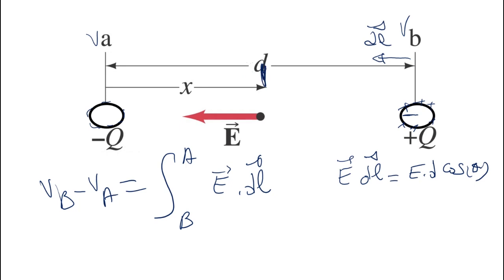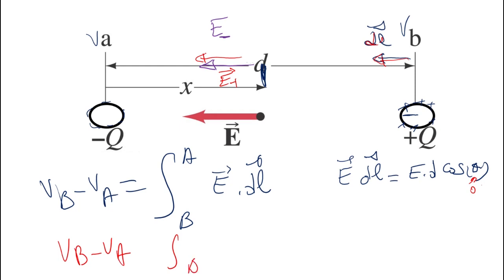We have the electric field E from the negative charge going toward the negative charge, and the electric field from the positive charge also going in that same direction. Since the displacement is in the same direction as the electric field, theta is 0, and cosine of 0 is 1. Therefore, the electric potential difference VB minus VA reduces to the integral from B to A of E dL, and we need to find the electric field produced by each wire.